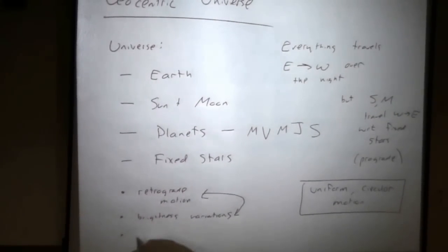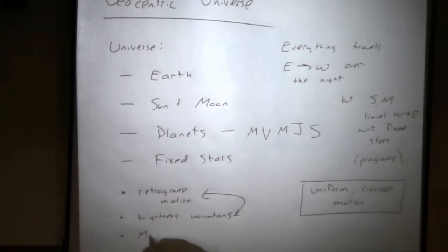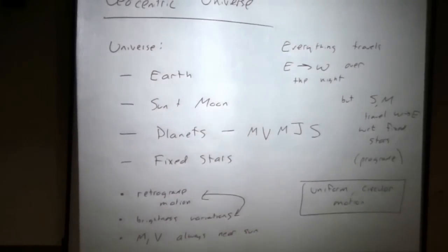And the final thing that we have to explain, again, either the Greek model or more modern models, Mercury and Venus are always near the Sun. Jupiter, Saturn, Mars, we can see them on the exact opposite side of the sky. The Sun can be going down. They can be coming up. But Venus and Mercury are always within some angle of the Sun. You'll never have it on the opposite side of the sky. It can never build up that much of a displacement from the Sun. That needs to be explained as well. These are the three big things we need to explain, all involving the planets.